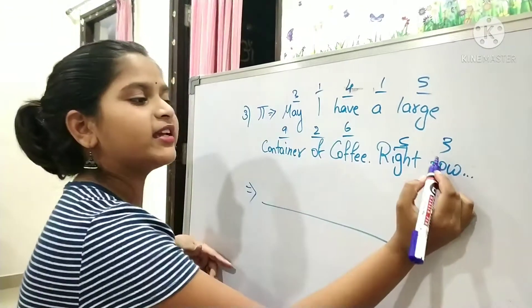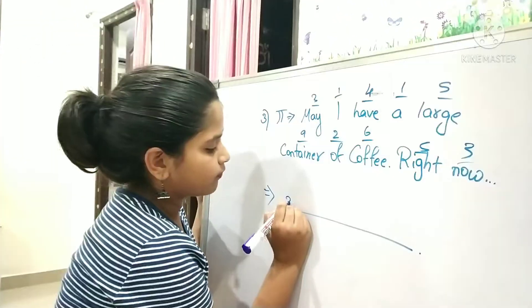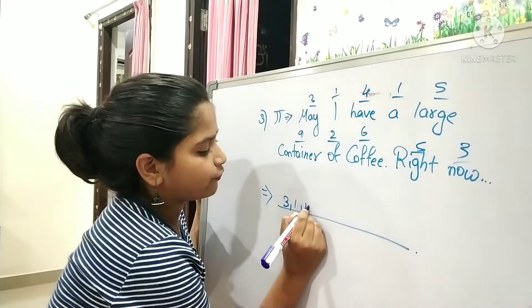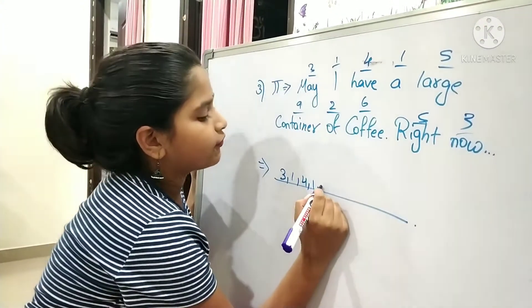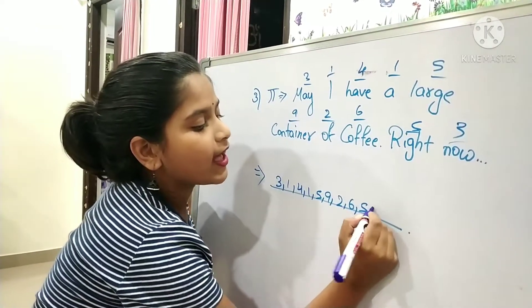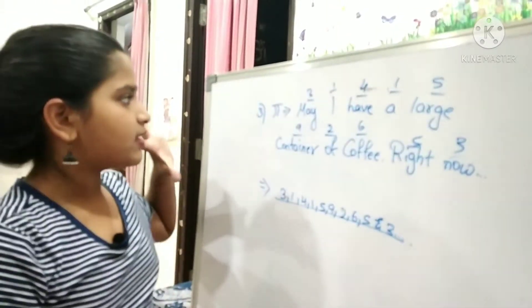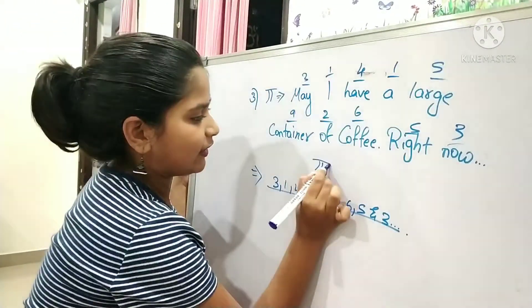3, 1, 4, 1, 5, 9, 2, 6, 5, 3 - this is leading us to the pi value: 3.141592653. Next, I'll be explaining 21 times 32, and we're going to find what the answer will be.